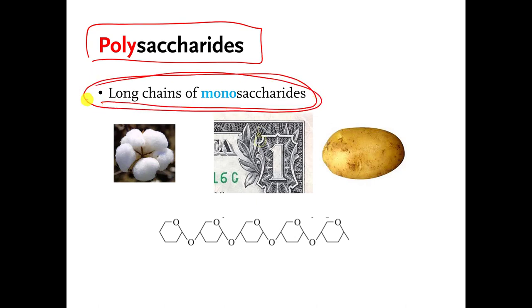Polysaccharides are basically made by taking a bunch of monosaccharides and connecting them to each other in more or less the same way over and over again. This is my cartoon for a polysaccharide. All of these things are largely made of polysaccharides.